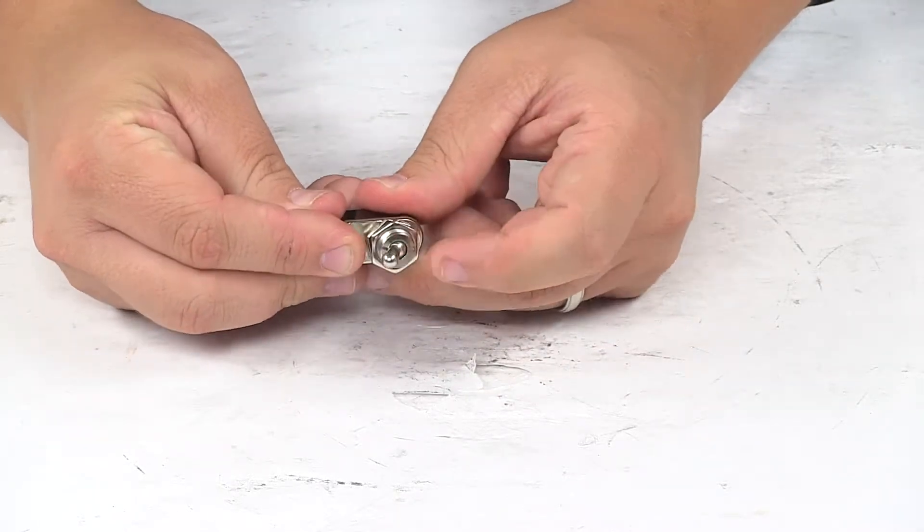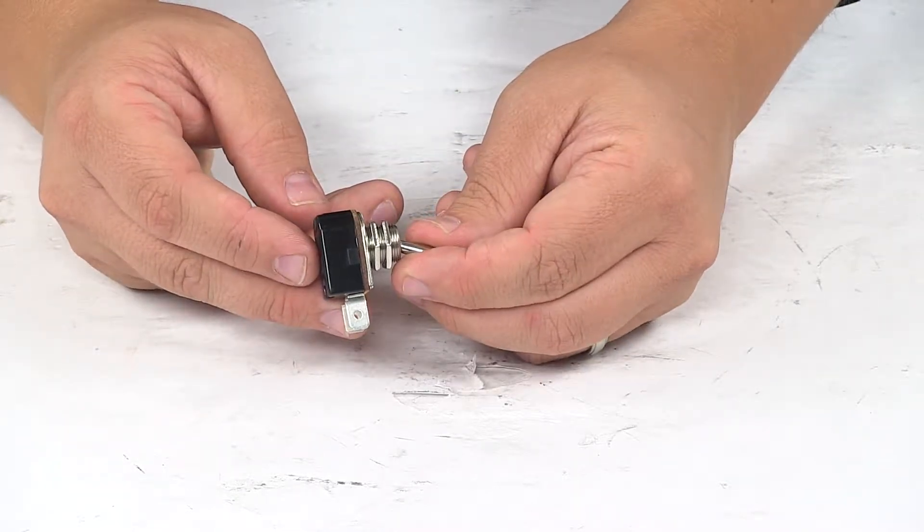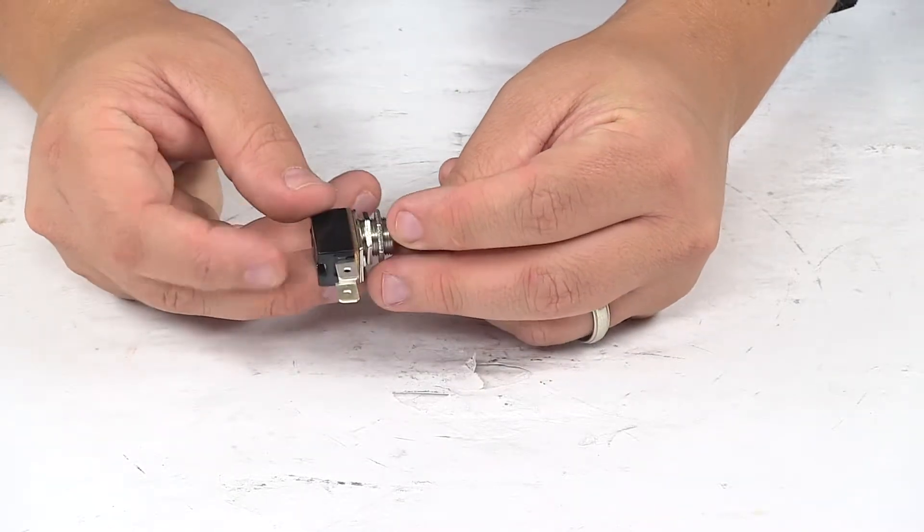The toggle switch lets you easily turn the lights on and off. It easily mounts into your existing panel to engage the two blade terminals for power.